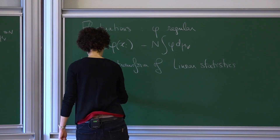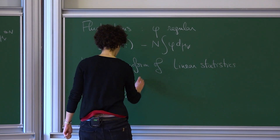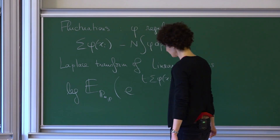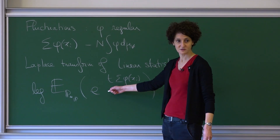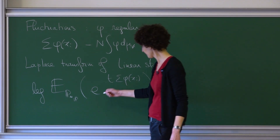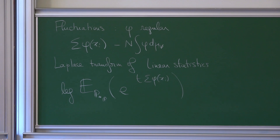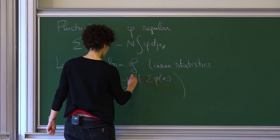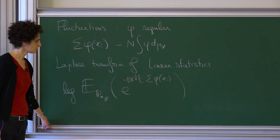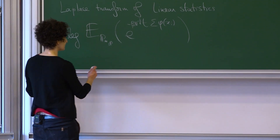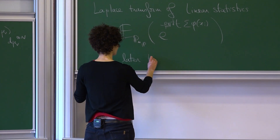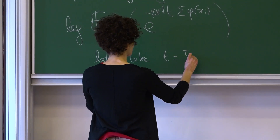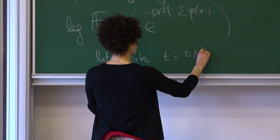Let's look at log expectation of e^(t * sum phi(xi)). I want to understand this for every real parameter t. To make it more suited, let's add minus beta N^(1-s/d) times t. Later, what we will want to do is take t equals tau N^(s/d) over beta.